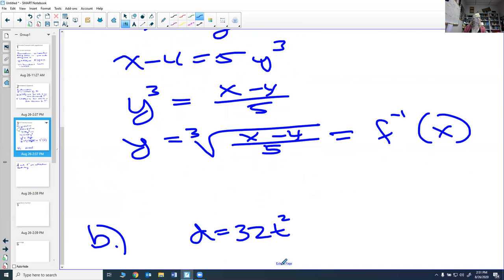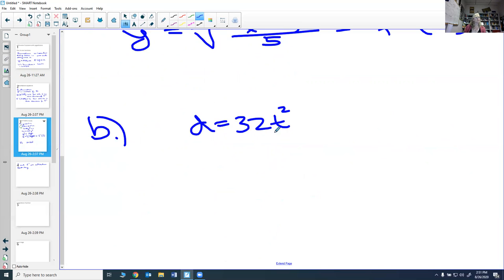Another function I could do is d equals 32t squared. Now in reality, this is not one-to-one. If I were to graph up 32t squared, I would get a parabola, so I would get a graph that looks like this, which means for every y there's two x's. So it doesn't pass what we call the horizontal line test. It passes the vertical line test because it's a function, but doesn't pass the horizontal line test. So in this case it's not actually working.